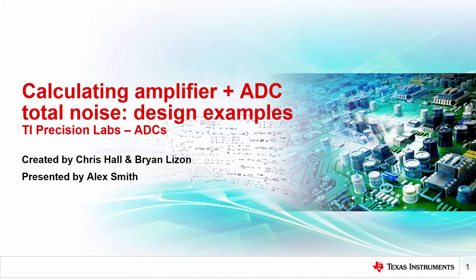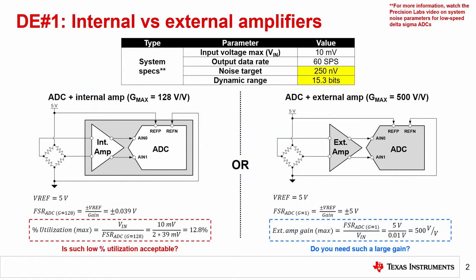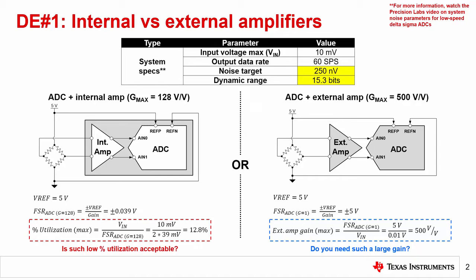The first example covers selecting an ADC with an integrated amplifier versus an ADC with an external amplifier. For this example, let's use the same system specs presented in the Precision Labs module on system noise parameters for low-speed delta-sigma ADCs. These specs represent a 10-millivolt resistive bridge measurement that requires a 250-nanovolt noise floor and 15.3 bits of dynamic range. As you might guess, this application requires an amplifier.